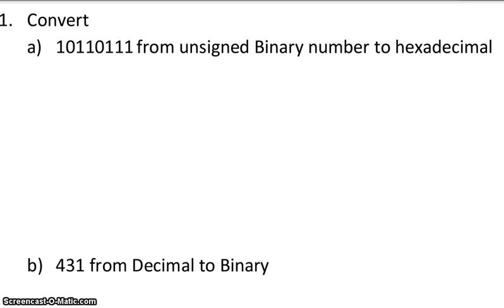First problem: let's take a look at converting from binary to hexadecimal. Converting from binary to hexadecimal is fairly straightforward. Hexadecimal means going from 0 to 15 — a number system that has 16 numbers in it. It starts 0 to 9 and goes A through F. Since hexadecimal contains 16 values, it can be represented by 4 bits.